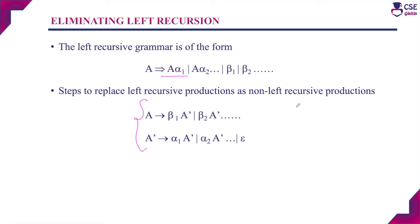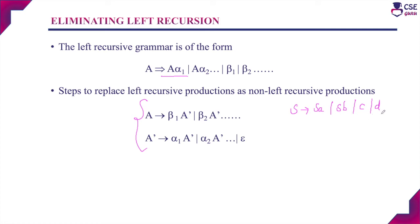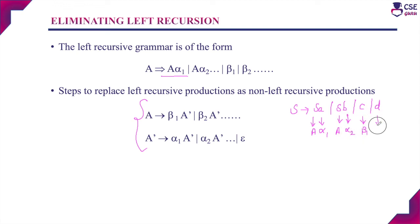For example, consider the grammar S derives S-a or S-b or c or d. This is a left recursive grammar with more than one alpha production and more than one beta production. Here A is S, alpha1 is a, alpha2 is b, beta1 is c, and beta2 is d.